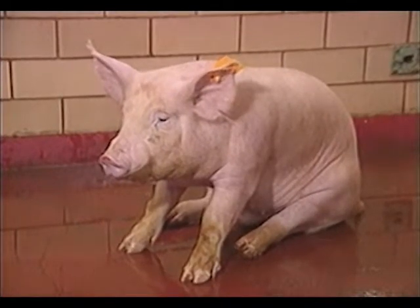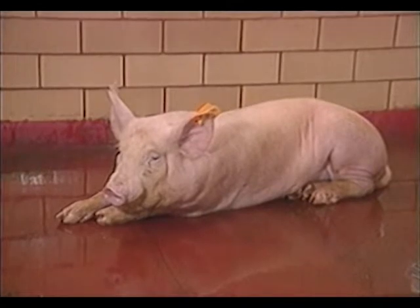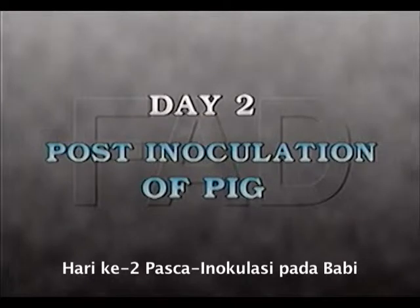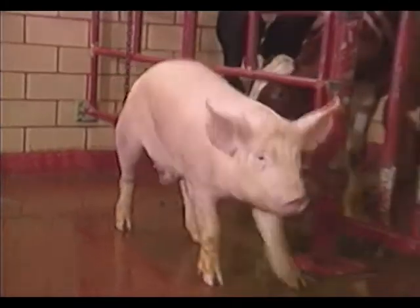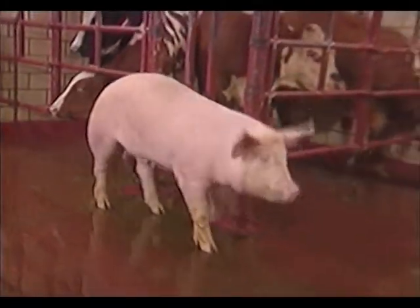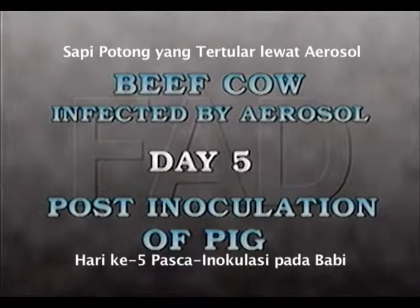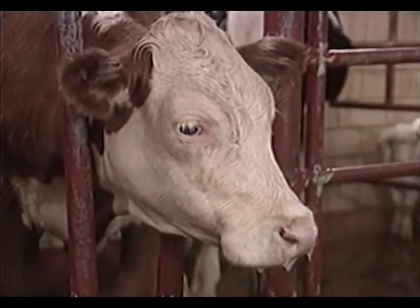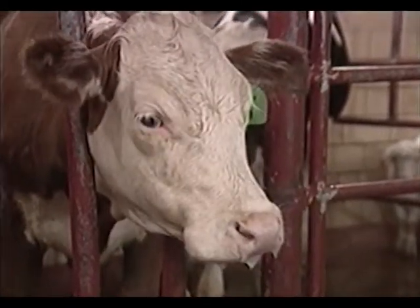Inokulasi bukanlah cara infeksi PMK yang umum. Untuk menunjukkan jalannya penyakit sebagaimana biasanya ditularkan, seekor hewan terinfeksi — yaitu babi — dimasukkan pada sekelompok hewan dengan berbagai spesies. Kepincangan telah mulai muncul pada babi yang diinokulasi, sementara semua hewan lain masih tampak normal. Tiga hari kemudian, sapi potong menunjukkan tanda-tanda PMK.